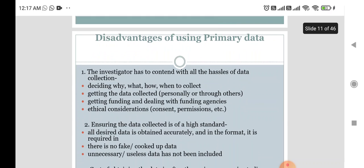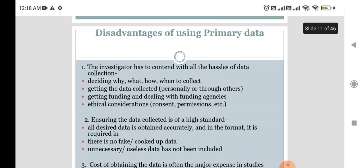Regarding disadvantages of primary data: the investigator has to contend with all the challenges of data collection — deciding why, what, how, and when to collect. Getting the data collected from each individual person is very tough. Getting funding and dealing with funding agencies is also a demanding task. Ethical considerations, consent, and permissions have to be obtained for any data collected, and ensuring the data collection is of high standard is also a concern.